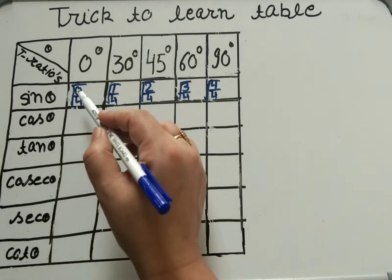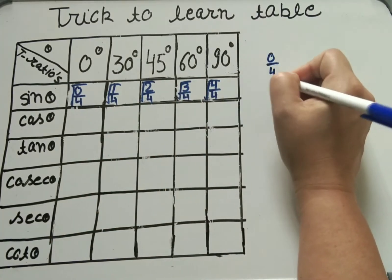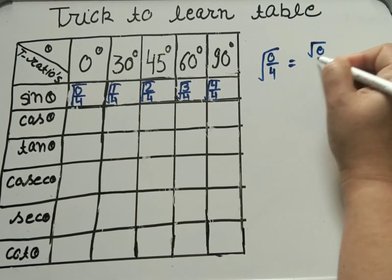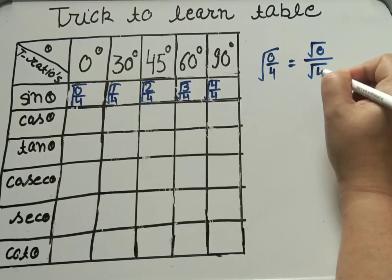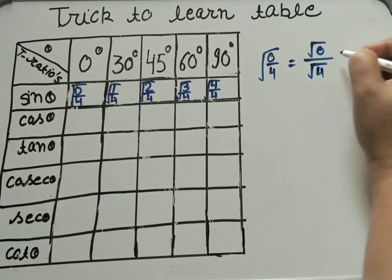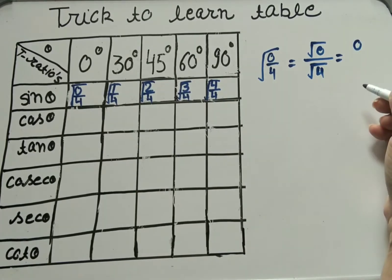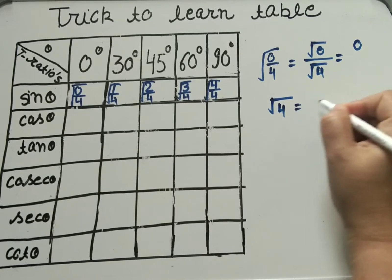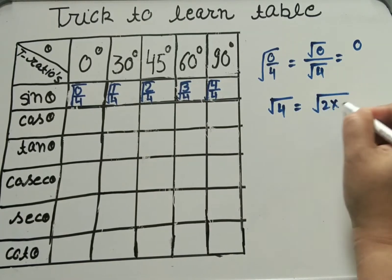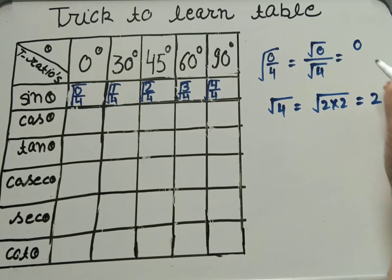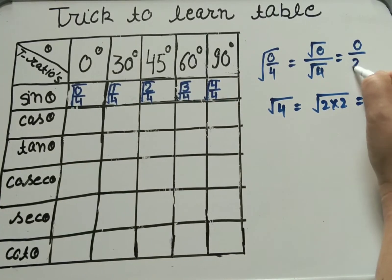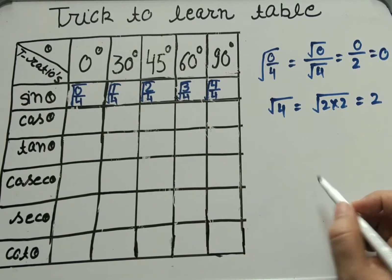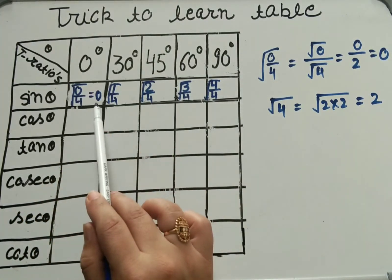Now in the first step, take the square root of 0 upon 4. We can write it as under root 0 upon under root 4. Square root of 0 equals 0, and square root of 4 equals 2 (since 2×2=2). So denominator becomes 2, and 0 upon 2 equals 0. The value of sin theta at 0 degrees is 0.